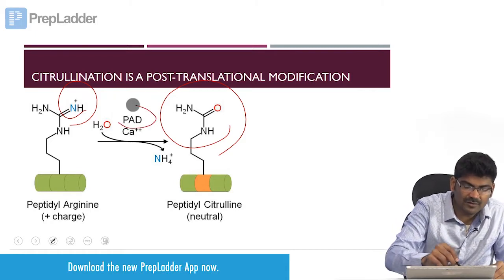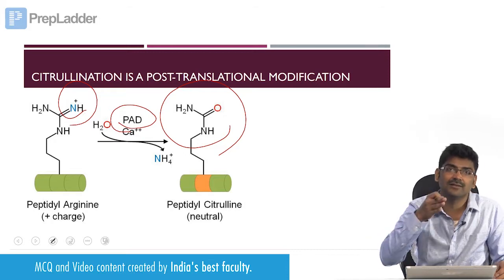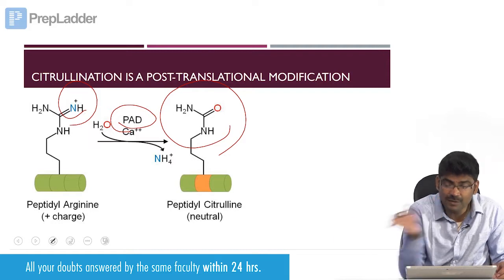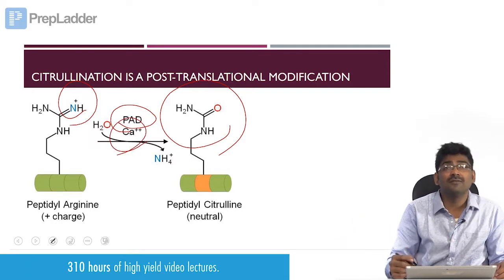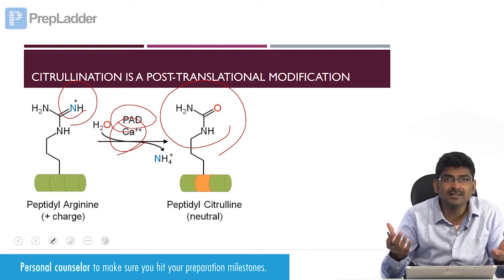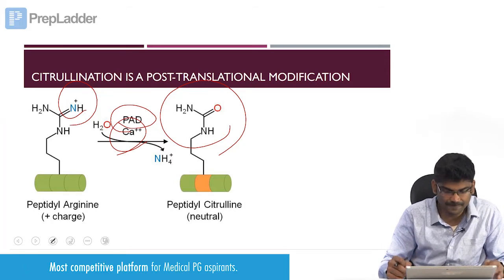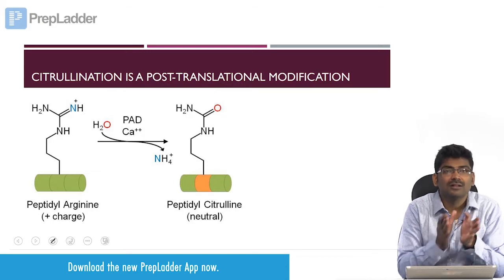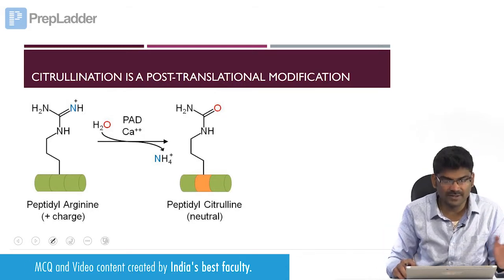The enzyme involved is peptidyl arginine deiminase (PAD). It is de-imination. Calcium is involved — we know that an intracellular increase in calcium results in the death of the cell. This is how chromatin decondensation happens.